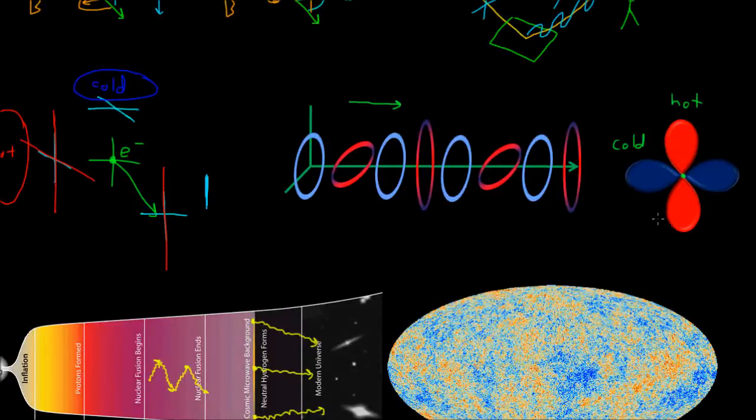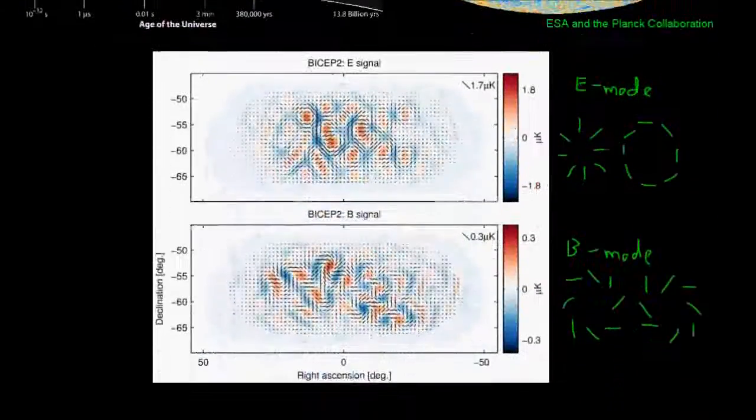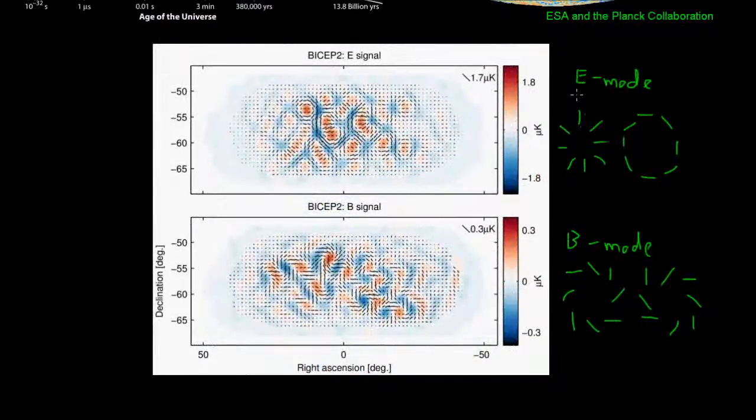And the specific way in which the electron sees this hot and cold pattern and produces this polarization will not only produce E-modes in the CMB, but also produce B-mode patterns that do not get produced directly by density fluctuations.